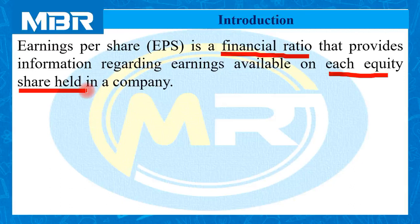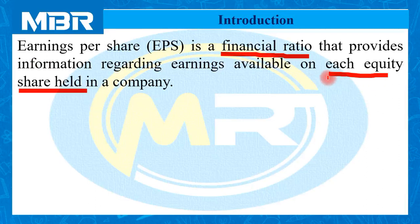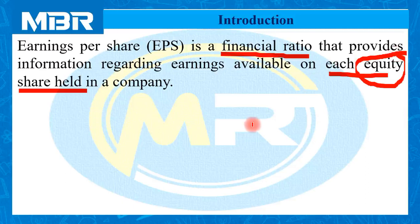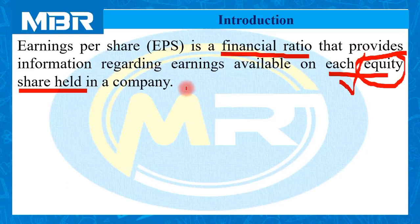We need to calculate Earning Per Share as a financial ratio using two different figures that we will discuss at a later stage. But at the end of the calculation, we need the result in the form of earnings available on each equity share held in a company. It should be clear that Earning Per Share is directly associated with equity shares. A company may issue preference shares — there are eight different types — but EPS is directly associated with the calculation of income, earnings, and profit per equity share held in a company.